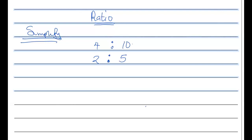So four ratio ten is going to be two ratio five. This one again: 10 ratio 25. Both of them — which number can go into 10 and 25? Five. So 10 divided by five is two, and 25 divided by five is five. That gives you two ratio five.